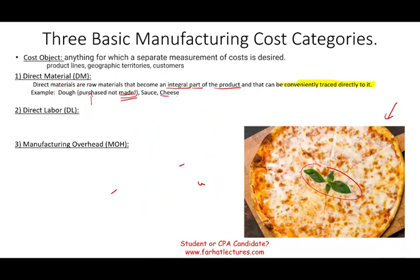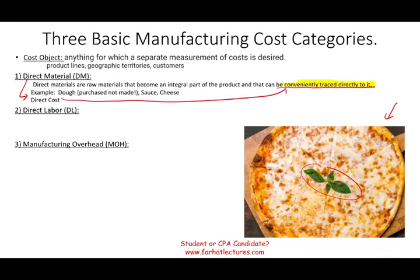The same thing goes with the cheese — we are buying the cheese, though we could also manufacture the cheese from milk. The sauce as well: we are buying the tomato sauce already finished, and putting all the products together. So this is what direct material is. By the way, direct material is also known as direct cost — a cost that can be conveniently traced directly to a product.